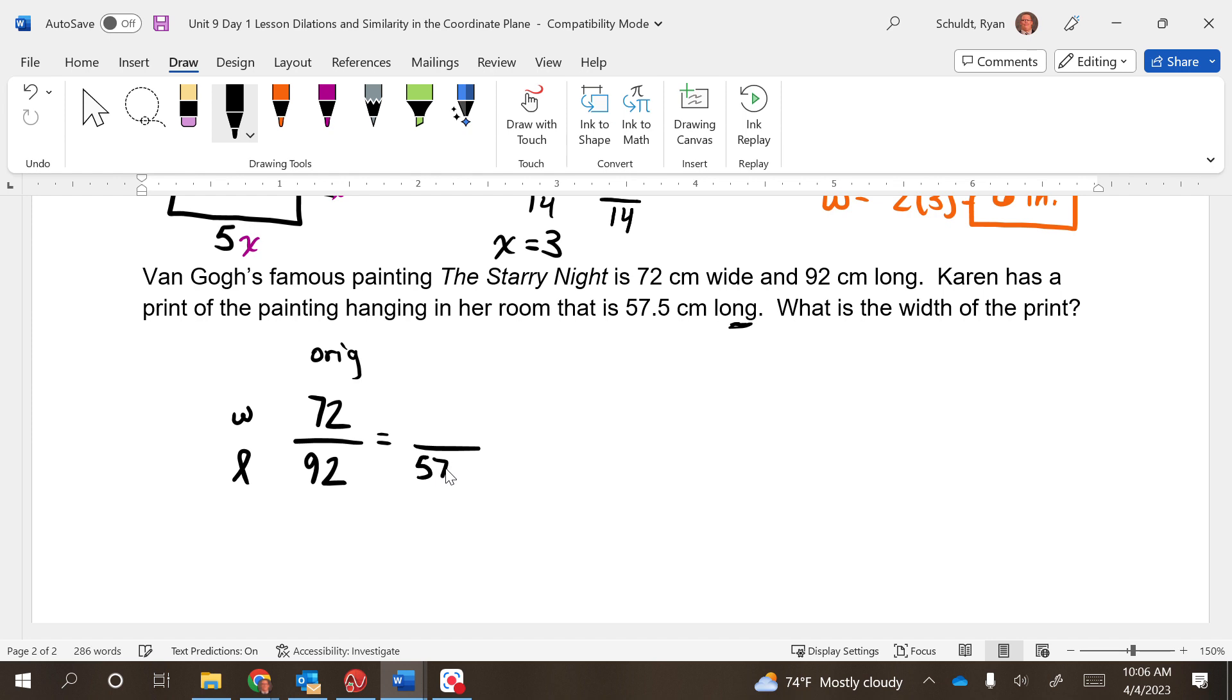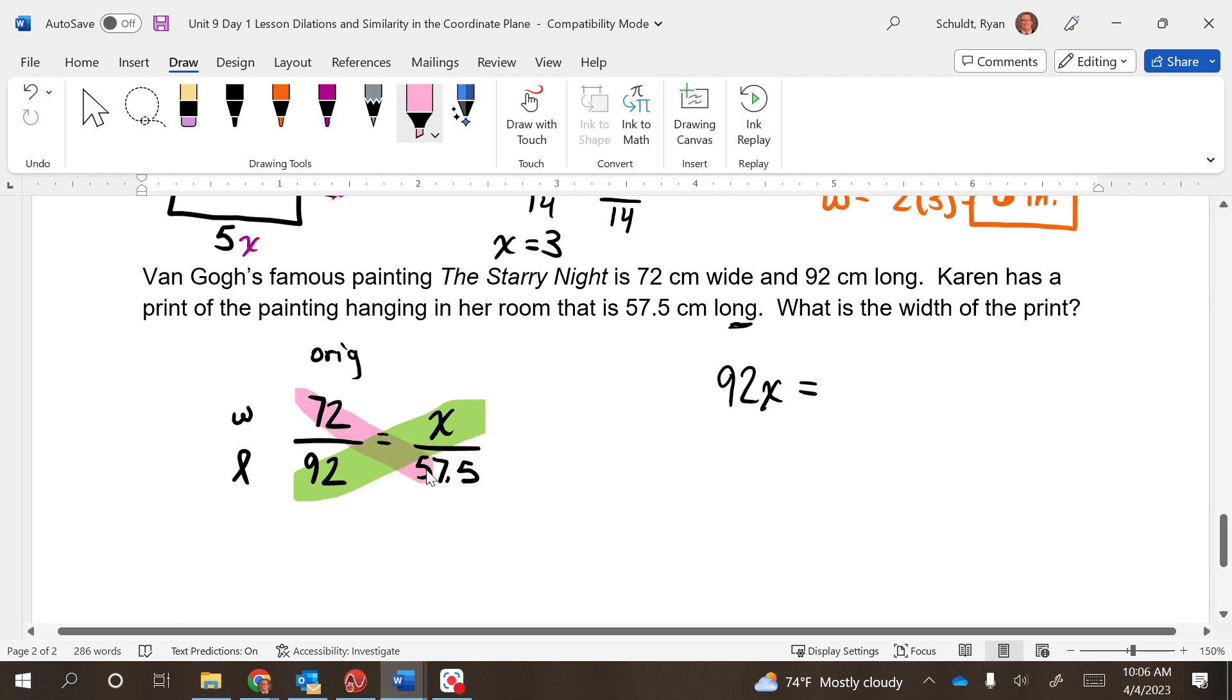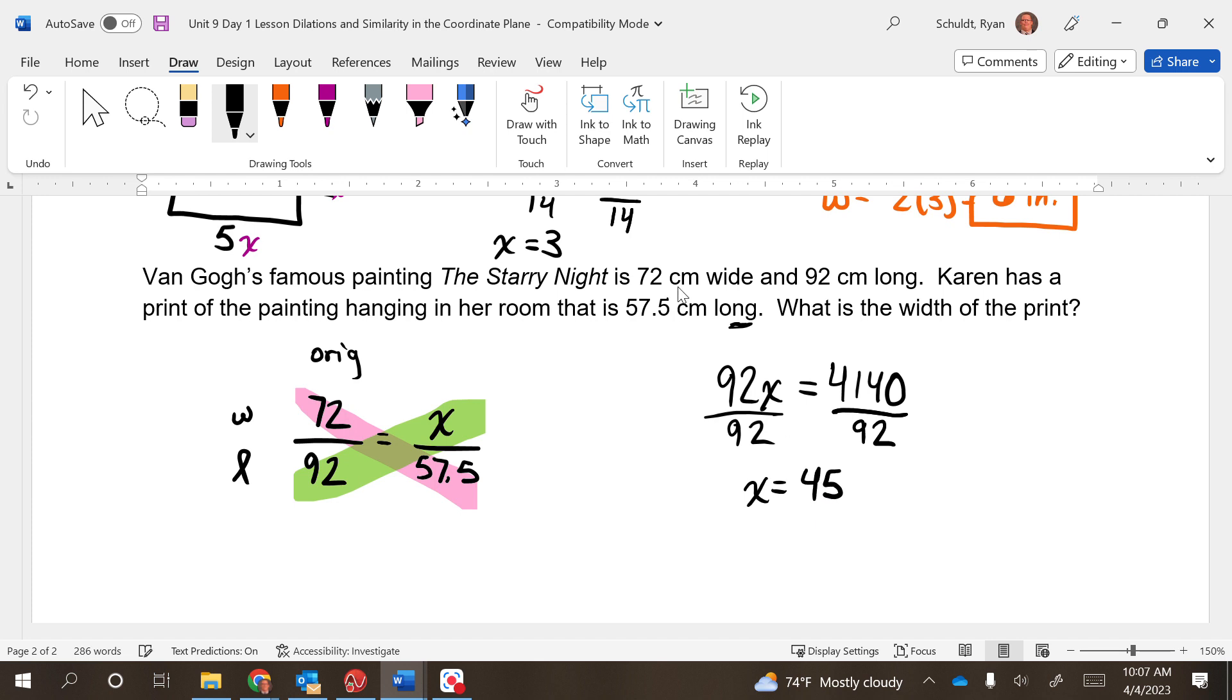Karen's is 57.5 centimeters long, so that means it has to go on bottom. That means that's got to be an x, and then we cross multiply. So 92 times x equals 72 times 57.5, which is 4140. Divided by 92, and we get x equals 45. Our units are centimeters.